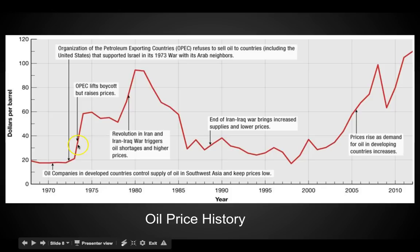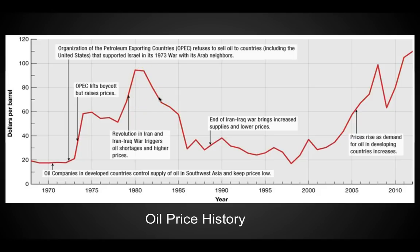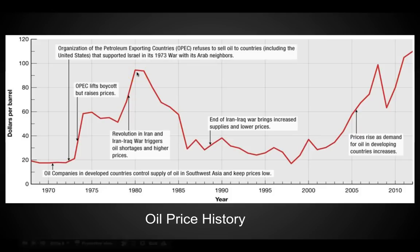OPEC lifted its boycott but raised prices, so the price of oil went up. Then just before 1980, a revolution in Iran and the Iran-Iraq war triggered oil shortages and higher prices — it got jacked way up. I remember in the 80s when we wanted to go on a summer vacation and couldn't because the price of oil went way up. I was supposed to go to Disney World, but this situation ruined it because my dad was a minister with a limited income and we could not afford the gas.